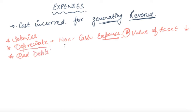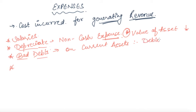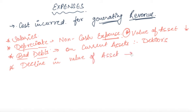The next example of expense is bad debts. Depreciation is charged on capital assets, but bad debt is the expense of daily nature and is on current assets, that is debtors. The next example of expense is decline in value of asset, such as devaluation of investment.